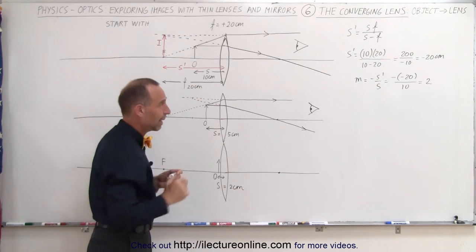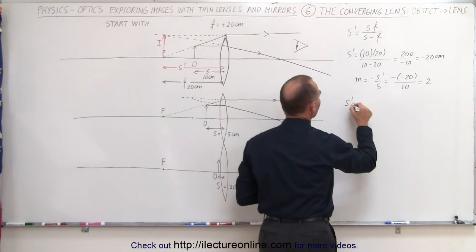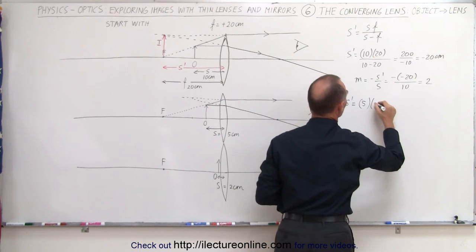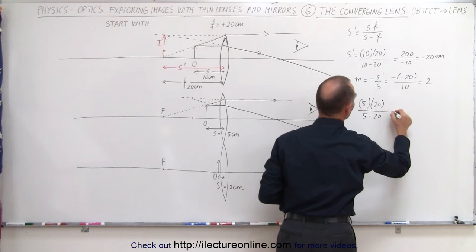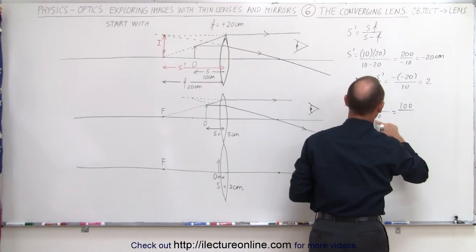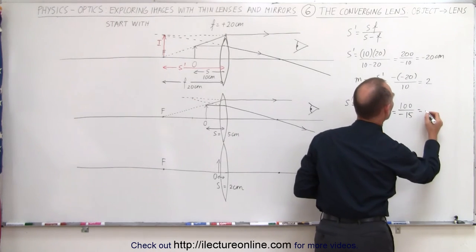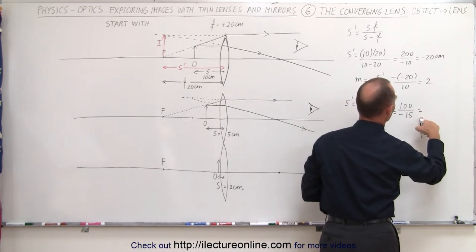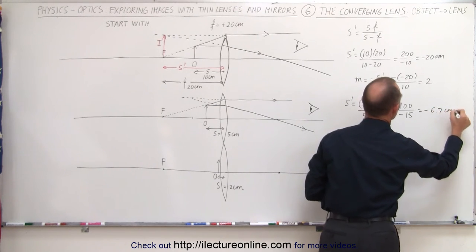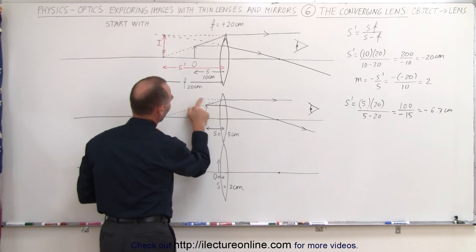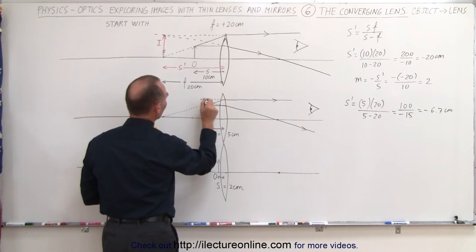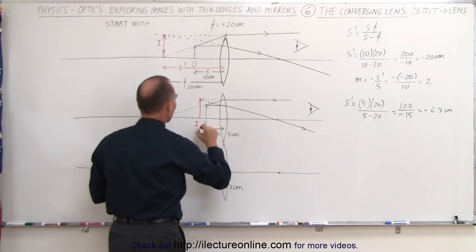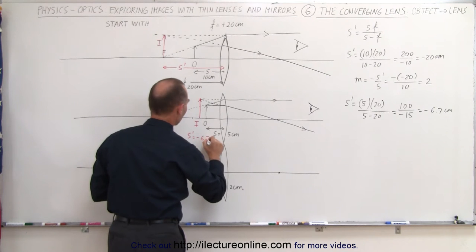The rays will converge right here at the halfway point between the lens and the focal point — or so it looks graphically. Let's make sure mathematically. S prime, the image distance, will be equal to the object distance — five centimeters — times the focal length — 20 centimeters — divided by five minus 20, which is equal to 100 divided by minus 15. That would be minus 6.7 centimeters. So instead of at the halfway point, the rays actually converge at about 6.7 centimeters in front of the lens. S prime equals minus 6.7 centimeters.